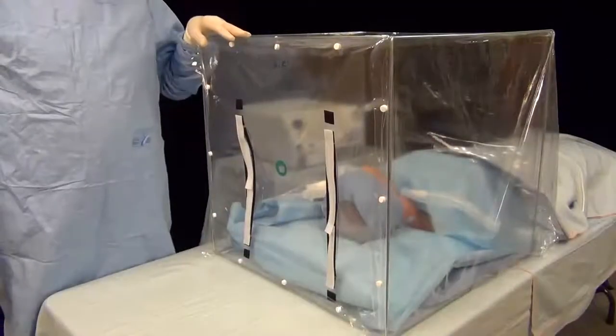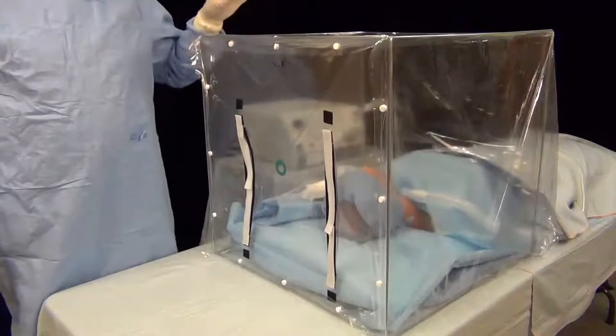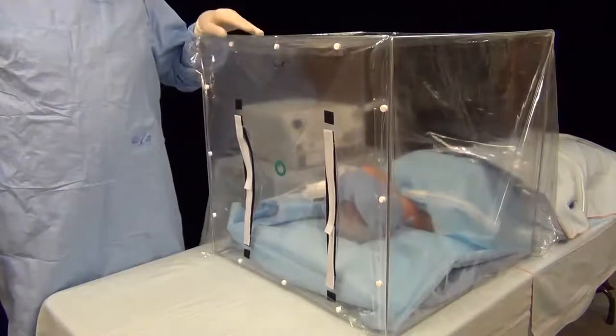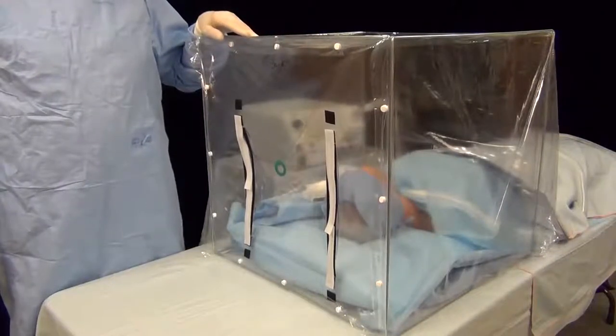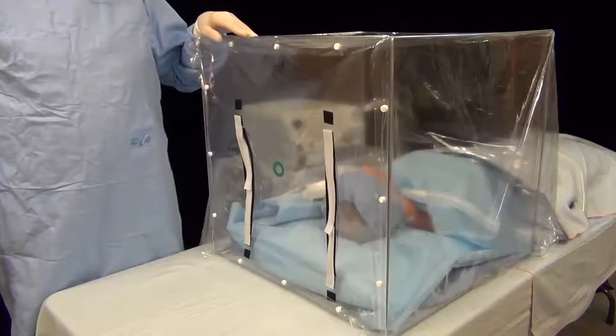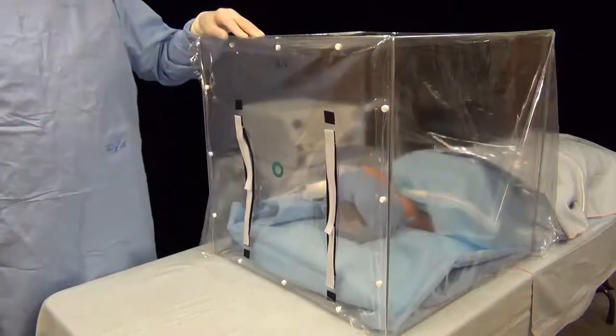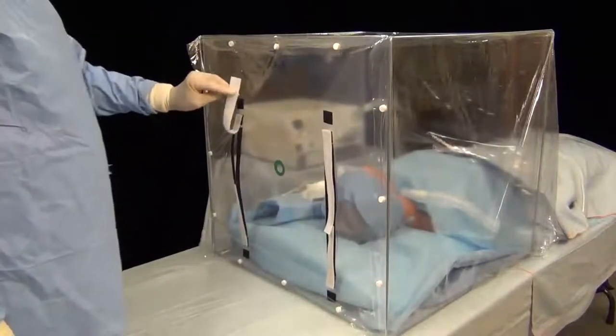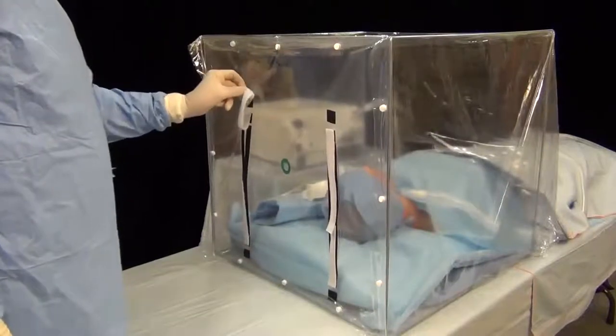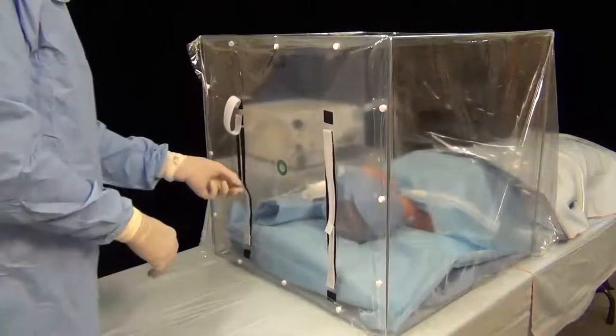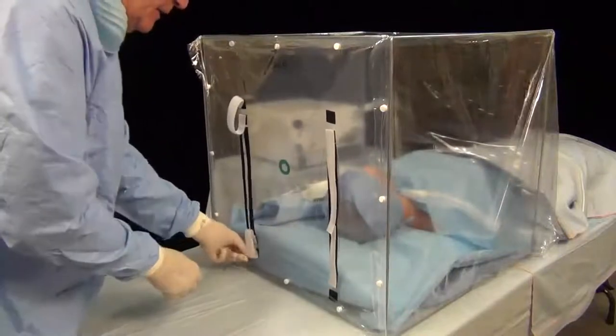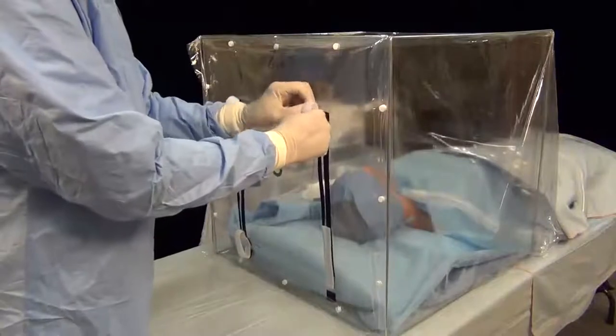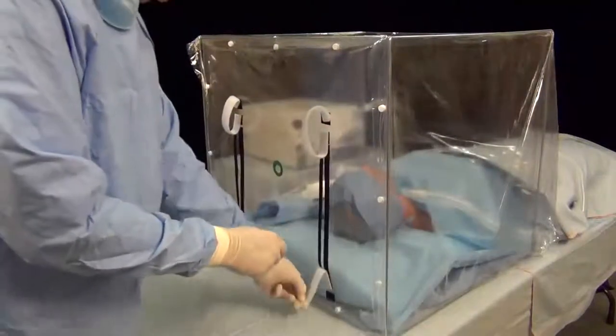Now that the tent has been constructed, the patient is in place. The respiratory tubing is already inside the tent, ready to be connected to the endotracheal tube. Now let's see how we can access the patient for purposes of intubation or extubation. First thing we should do is pull up the tabs that expose the opening. These are held in place by these tabs just beyond the access port, so they stay out of your way.